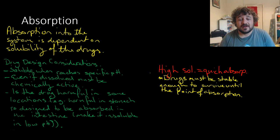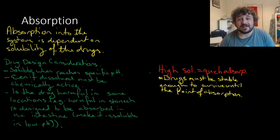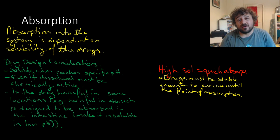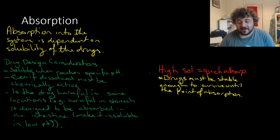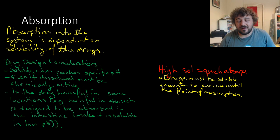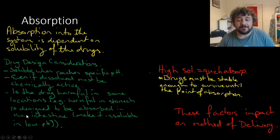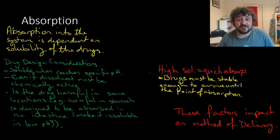Is the drug harmful in some locations? For example, there are some drugs which are harmful in the stomach, so they get put in something called enteric-coated tablets so that they make it all the way through the stomach and then start to break down in the small intestine. The way you would do that is you would make it soluble at a high pH. These factors basically affect the method of delivery, which is what the rest of this lesson is going to talk about.